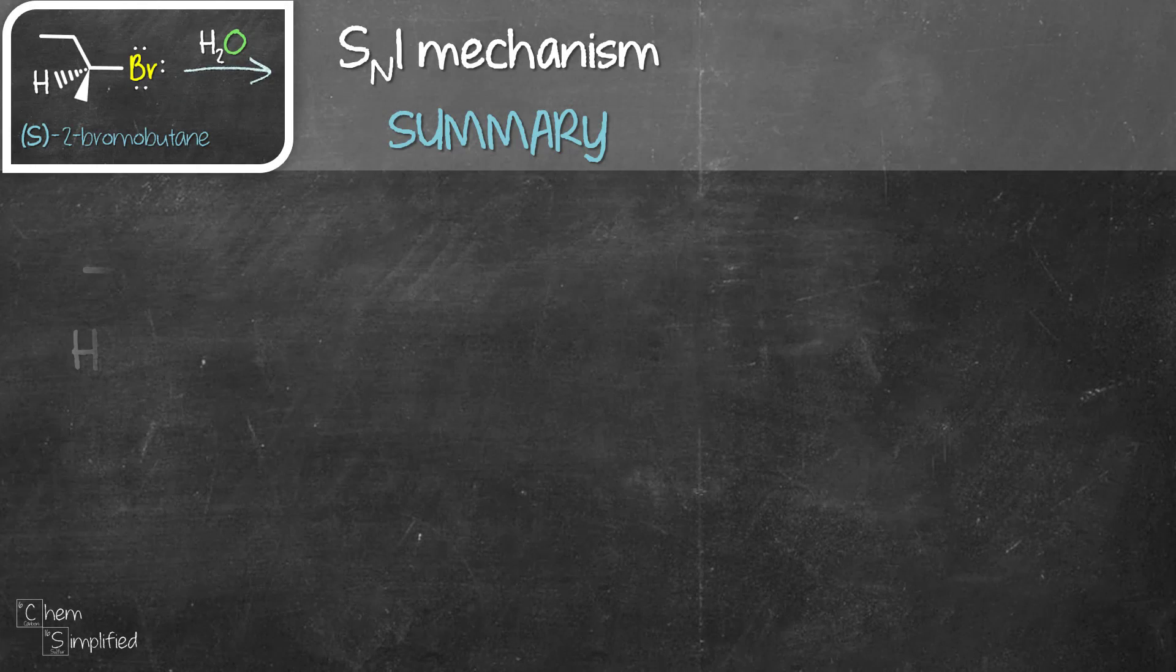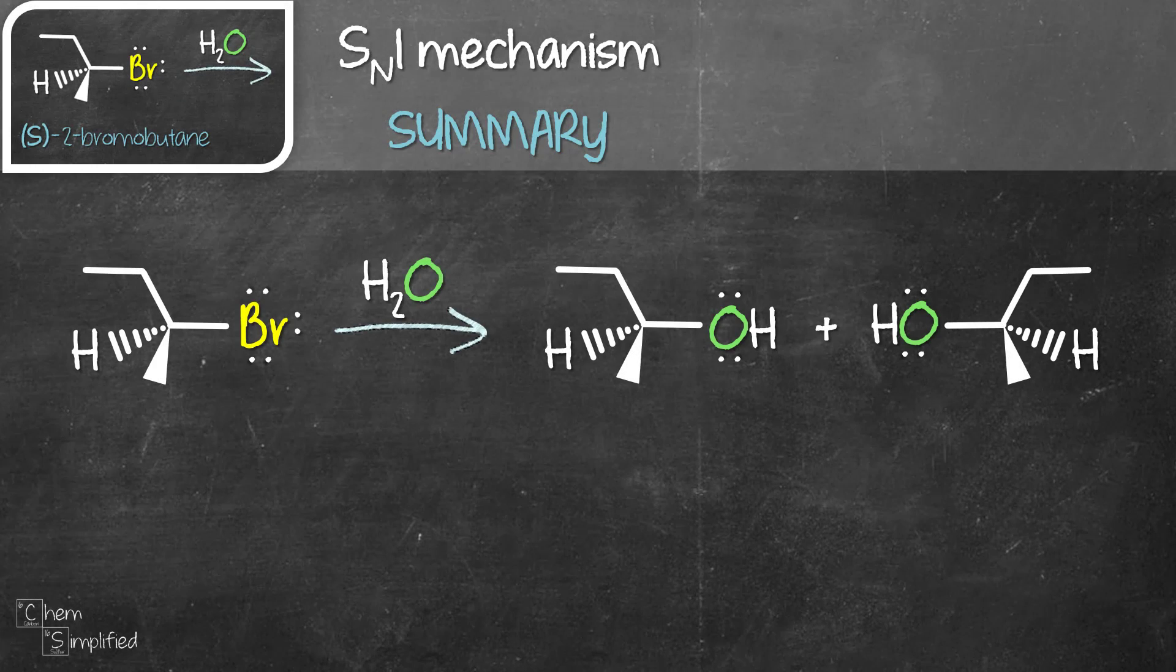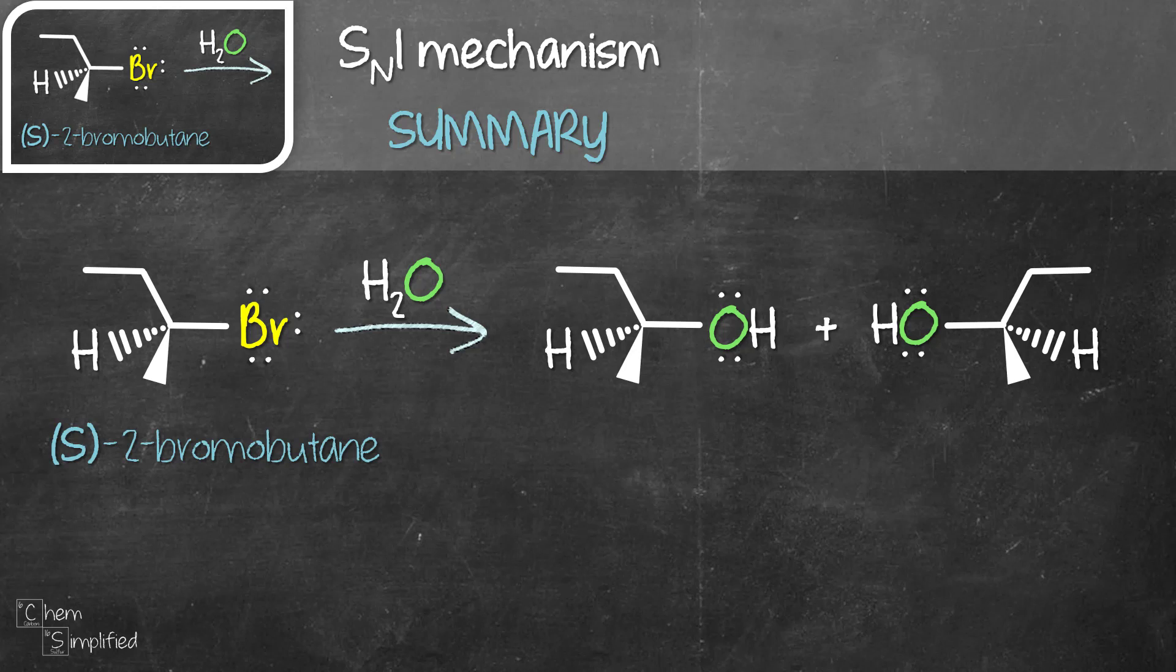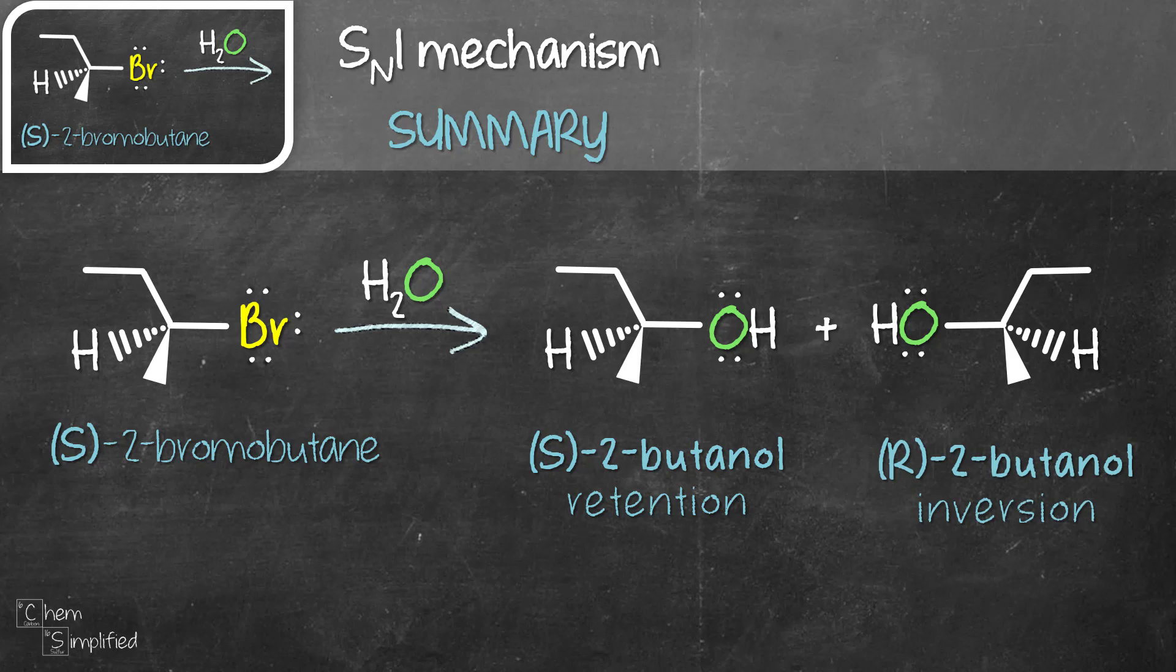To sum up the SN1 mechanism, we started with an alkyl bromide. Adding water, we get two alcohols that are enantiomers. Our substrate is S-2-bromobutane and we get S and R-2-butanol. Since the stereochemistry for S-2-butanol is the same as our substrate, we say there's retention of chirality.